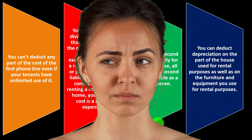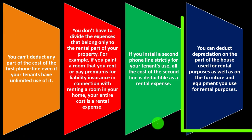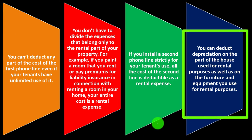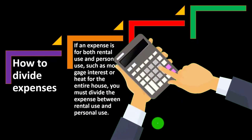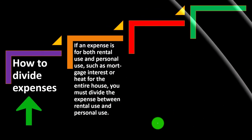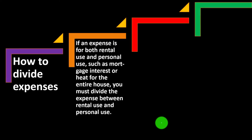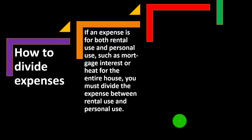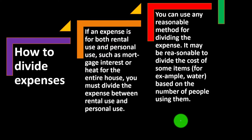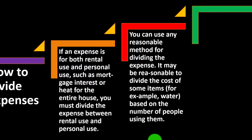It gets a bit confusing because you've got the whole property and you're only renting part of it. You've got to figure the cost and the basis of the property, then determine the portion being rented to calculate the depreciation on. If an expense is for both rental and personal use, such as mortgage interest and heat for the entire house, you must divide the expense between rental and personal use using any reasonable method.